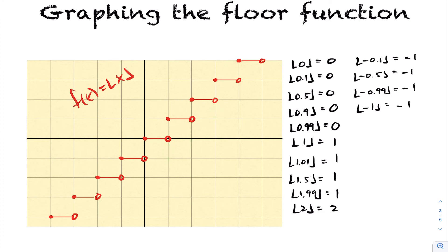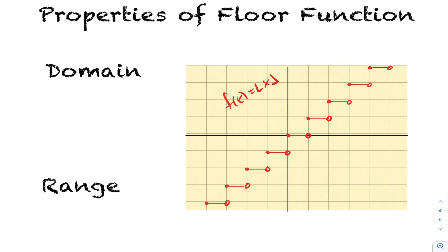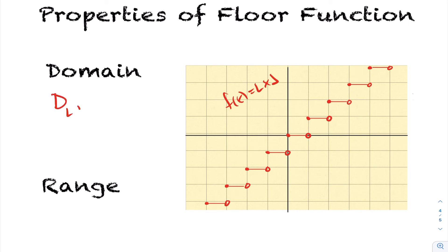This is the graph of the floor of x. Now that we have the graph, let's look at the domain, range, and other characteristics of the floor function. The domain consists of the input values the function can accept. You can see the domain is all real numbers — there's no real number for which you can't return the greatest integer less than or equal to it, and every x value on the axis has a corresponding output.